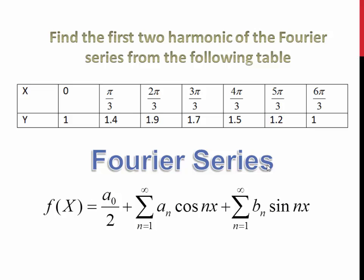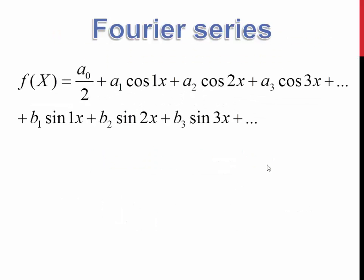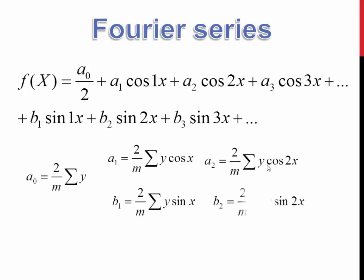When you expand this summation you get A naught by 2 plus A1 cos 1x plus A2 cos 2x plus A3 cos 3x and so on. B1 sin 1x plus B2 sin 2x plus B3 sin 3x and so on. You have a formula to find your constants A naught, A1, A2, A3, B1, B2, B3. These are the Euler's constants.